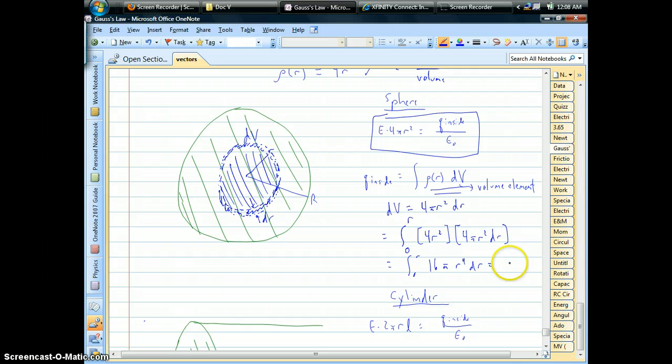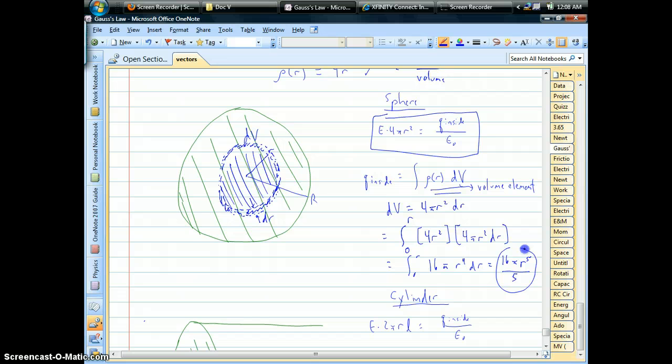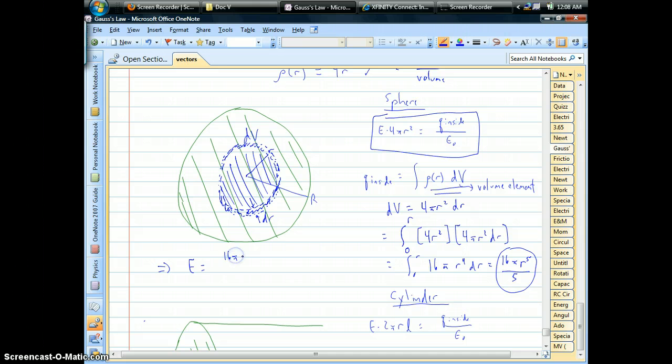Well, when you evaluate this thing we're going to get r to the 5th power, we have our constants 16 pi and you have to divide by that power of the 5. So that would be our charge inside that ball. And so when you were to find the electric field we've got our charge inside 16 pi r to the 5th all over 5 divided by the usual thing 4 pi epsilon r squared. So our field would go as we have what 4 times r cubed all over 5 epsilon.